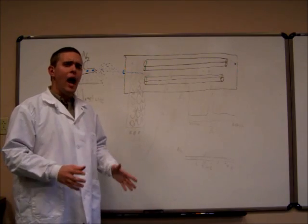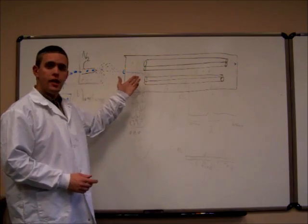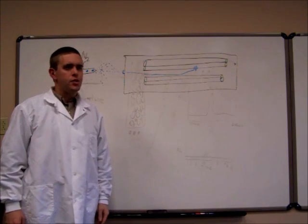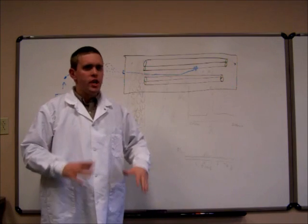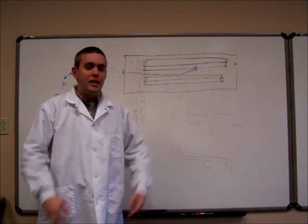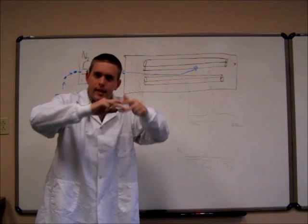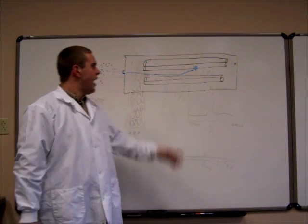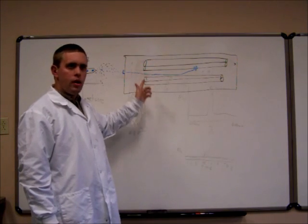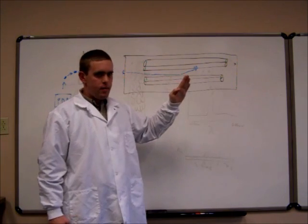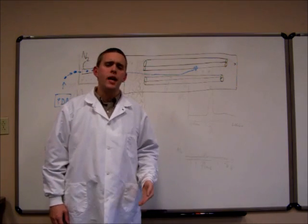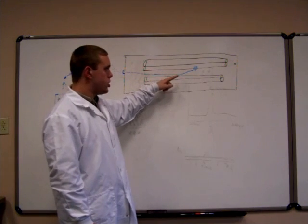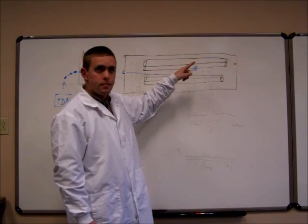Once our analyte has been ionized, it then enters into the quadrupole. The quadrupole is made up of four charged rods. These rods change their charge thousands of times a second, alternating between positive and negative charges. As the analyte enters the quadrupole, the charge deflects it. Most of the time, around 99% of the time, most of the analyte that enters the quadrupole, because of its charge, smacks right into it.